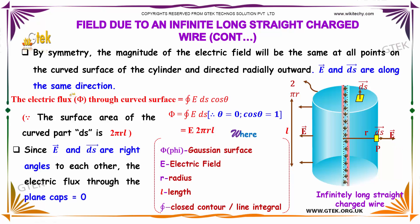Now the electric flux Φ through the curved surface will be the line integral E·ds cosθ. We know that the surface area of the curved part ds equals 2πrL.